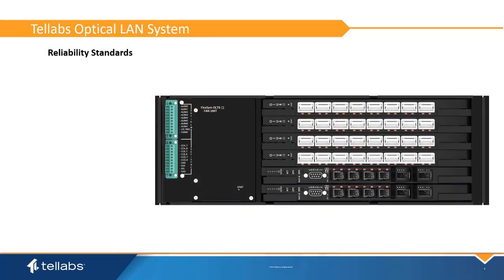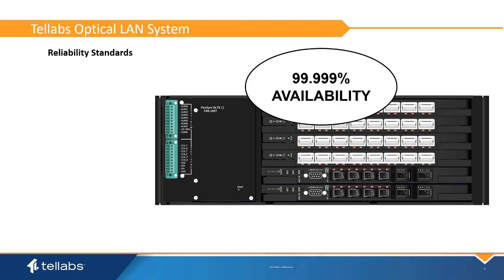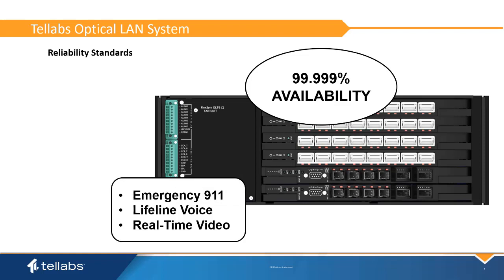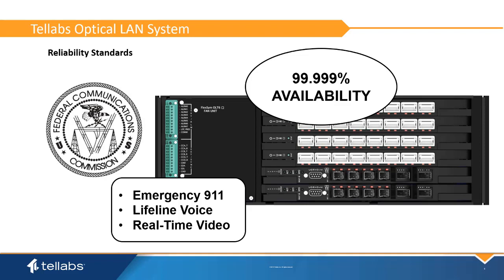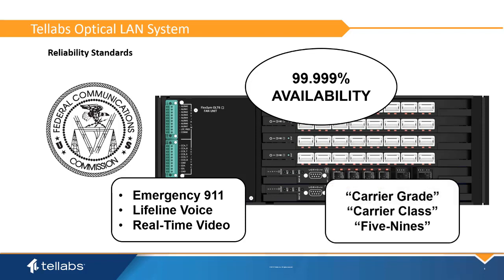An Optical LAN-based configuration can achieve 99.99%, or five nines, of availability. This is because Optical LAN is born from the telecommunications service provider world. Services delivered include E911, Lifeline Voice, and Real-Time Video. These services require 99.99% network uptime mandated by law and enforced by the FCC. Thus, Carrier Grade means that TELLAB's Optical LAN equipment is built upon higher grade components and is designed to legendary Bell Laboratory engineering criteria. This is the genesis of Carrier Grade, Carrier Class, and five nines reliability terms.